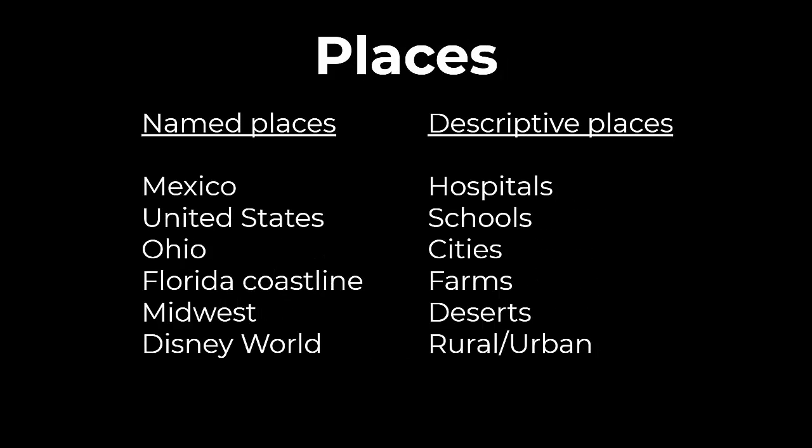Place words could be named specific places like countries, states, regions, or even a particular location like Disney World. Place words can also be more descriptive, talking about a type of institution, region, or geographic area — such as hospitals, schools, cities, farms, deserts, or rural and urban areas.